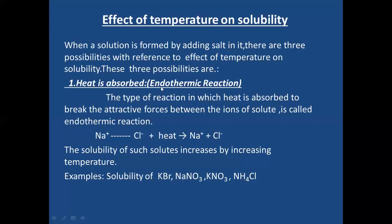The first type is an endothermic reaction — the type in which heat is absorbed to break the attractive forces between the ions of a solute. For example, sodium chloride consists of sodium ions and chloride ions attracted by ionic bonds. To break these bonds, we must provide heat. After heating, sodium and chloride ions separate and get ionized, so heat is absorbed — making it endothermic.